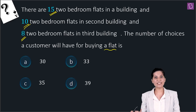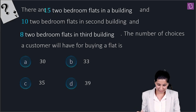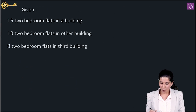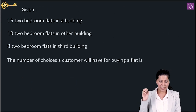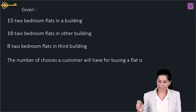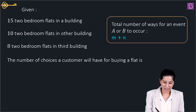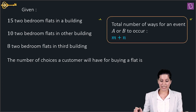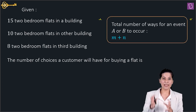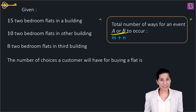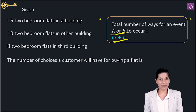How many flats are there in total? Let's start with the solution. This is the principle of addition, which says: if either event A or event B occurs, the number of ways is M plus N. So either I will buy a flat in the first building — 15 choices — or in the second building — 10 choices — or in the third building.